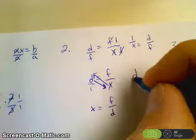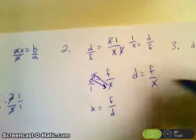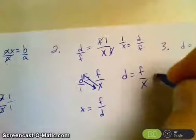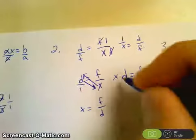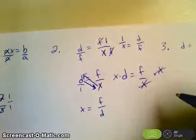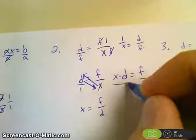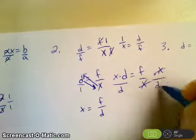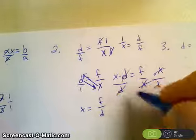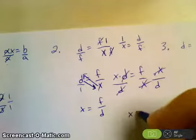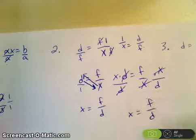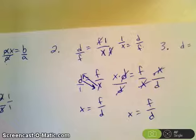Again, if you're going to set this up and do it as two steps, the first step, I'd multiply both sides by x. So x divided by x is 1, and then divide both sides by d. So now d divided by d is 1, so that I have x equals f over b. Again, just another way to look at it.